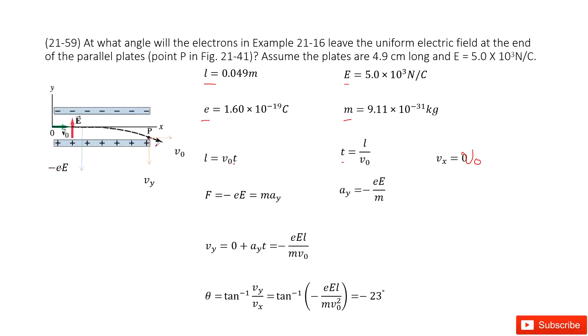Then at y-direction, we can see the net force is this one. We can write it as negative e times E. This is one negative fundamental charge times the electric field, which equals mass times acceleration ay. Therefore, we can get acceleration ay in this function.